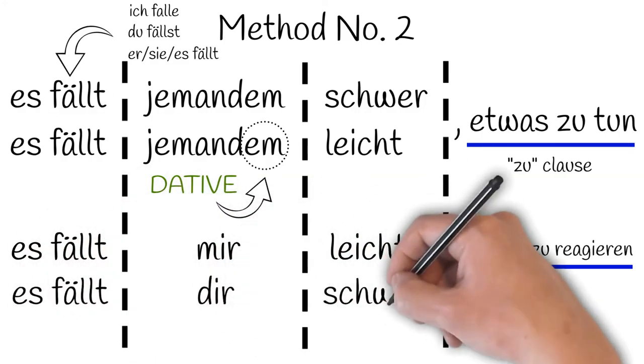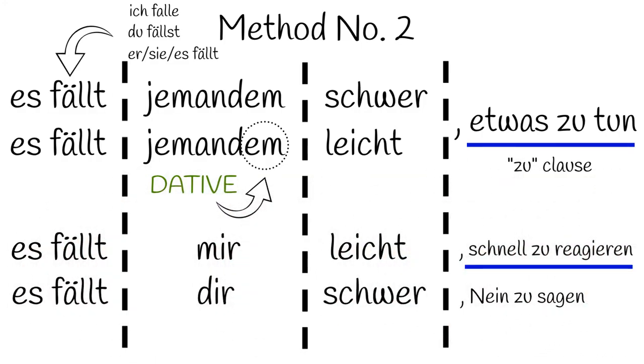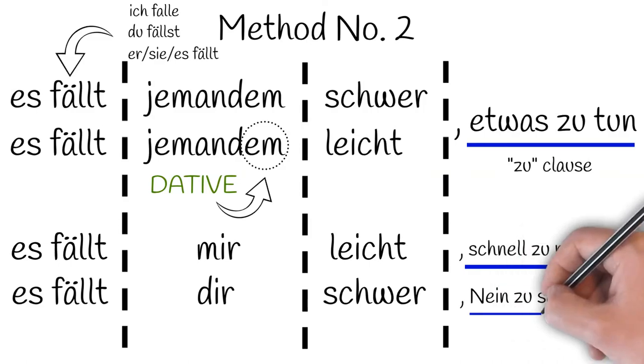Next example. Es fällt dir schwer nein zu sagen. It's hard for you, or it comes hard to you to say no. The only thing that needs to change in the first clause with the conjugated verb is the pronoun, dir, because we're talking about the person we're talking to, and the infinitival zu clause at the end, of course, does not change.